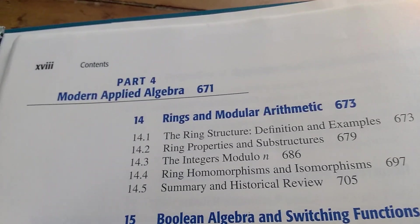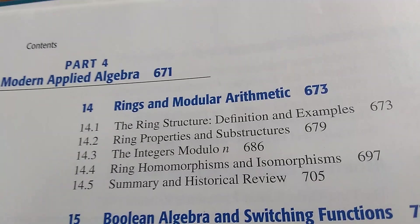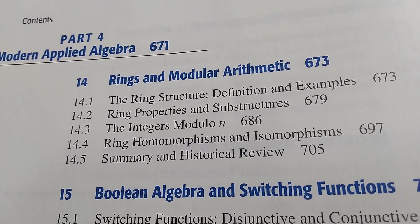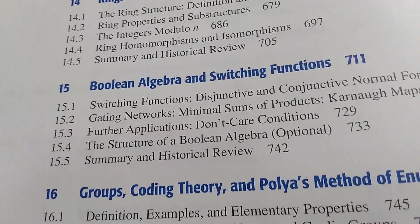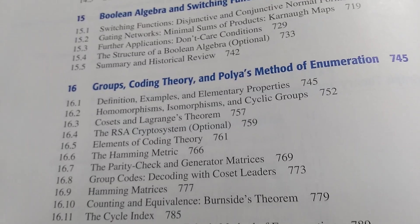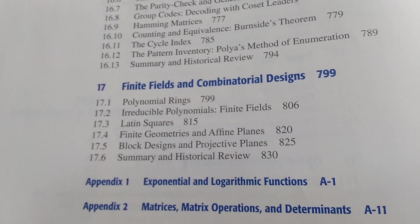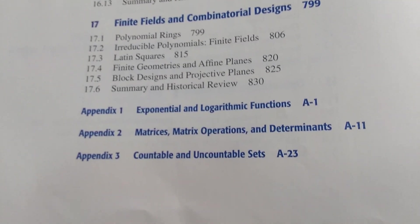The last part of the book is quite interesting. It's modern applied algebra. Grimaldi talks about rings and modular arithmetic, which is kind of cool, not very typical in a discrete math book. And then he finishes with finite fields and combinatorial designs. There's some appendices as well.